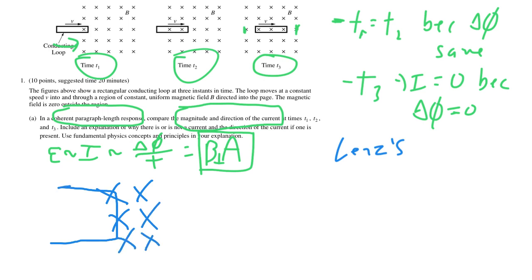So here's our B field here. As we start to enter the field, the flux is increasing. More of the area is enclosed, so the flux is increasing. So what we want to do is create a current that creates its own magnetic field that opposes that change. In other words, we want this flux to decrease.